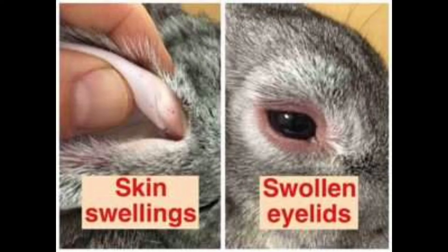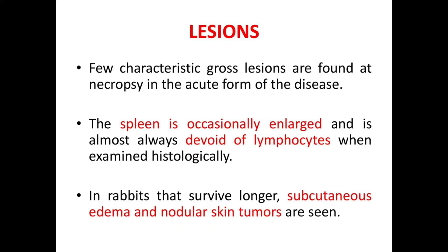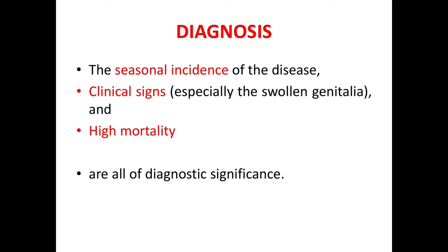There will be conjunctivitis and milky ocular discharge. Coming to the lesions: few characteristic gross lesions are found at necropsy in the acute form of the disease. The spleen is occasionally enlarged and devoid of lymphocytes when examined histologically. In rabbits that survive longer, subcutaneous edema and nodular skin tumors are seen.